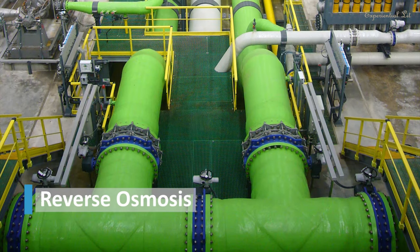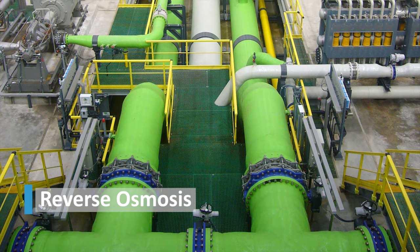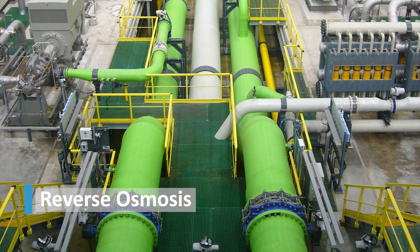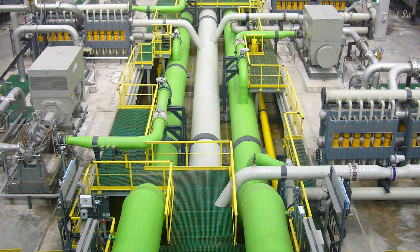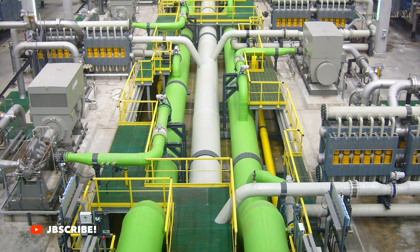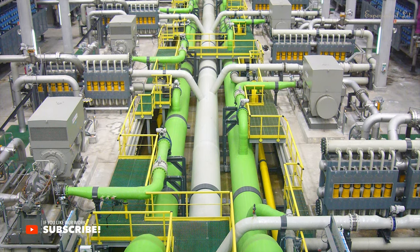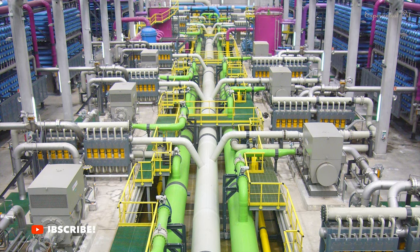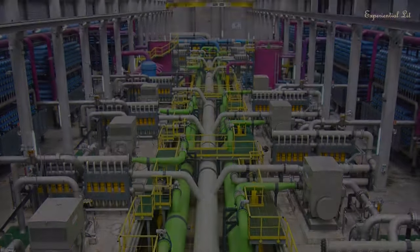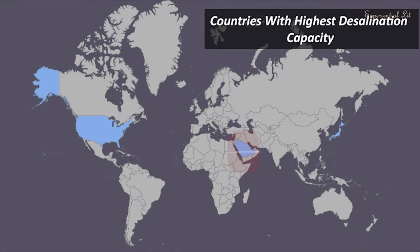The third method is reverse osmosis, used with multi-level filtering and later processed with high pressure through a semi-permeable membrane, leaving salt behind. This method is by far the most widespread application for membrane water treatment today. There are over 16,000 operational desalination plants in the world.